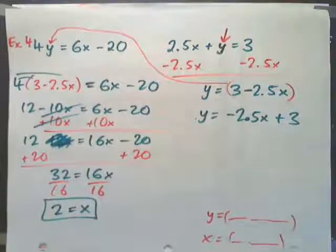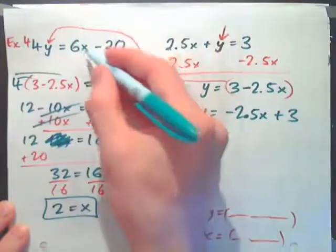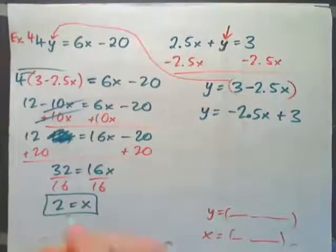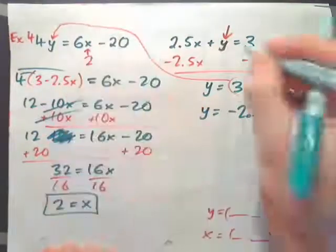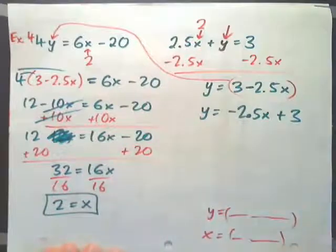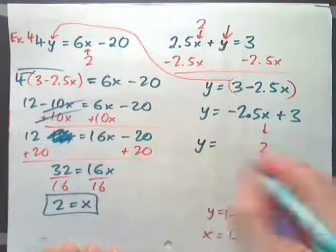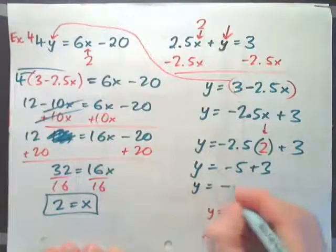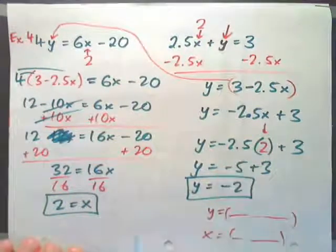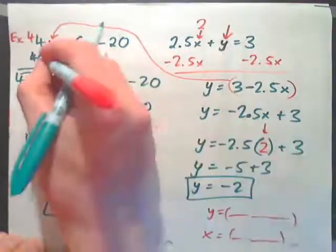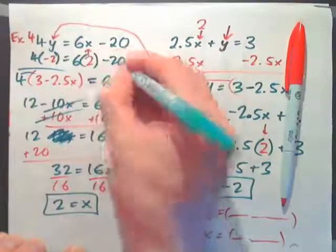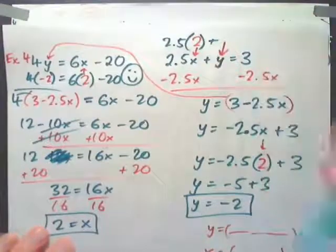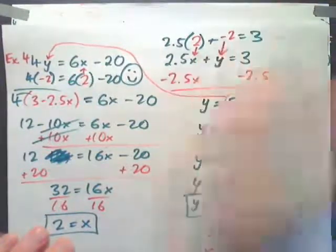Are we done? No — we started with two equations each having a missing x and y, so we also need y. The easiest equation to use is y equals 3 minus 2.5x; plug in x equals 2: y equals negative 2.5 times 2 plus 3, which is negative 5 plus 3, so y equals negative 2. Check: 4 times negative 2 equals negative 8, and 6 times 2 minus 20 is also negative 8. Also, 2.5 times 2 plus negative 2 equals 5 minus 2 equals 3. Both check out.